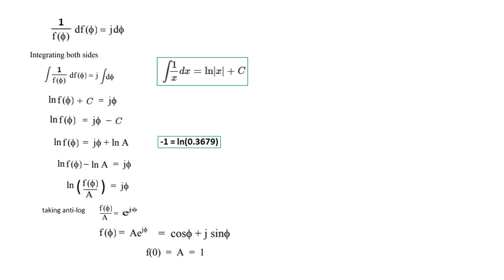So that means the value of A is equal to 1. So we will put the value back in the equation. So we can write that this function f(φ) is equal to, for A we have now put in 1, so e raised to the power jφ is equal to cos φ plus j sin φ.